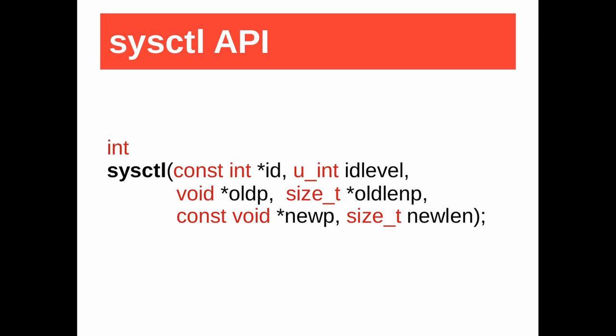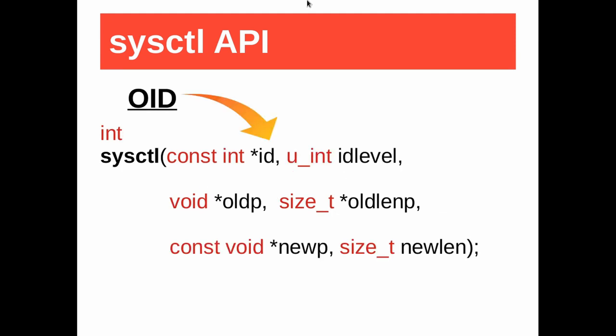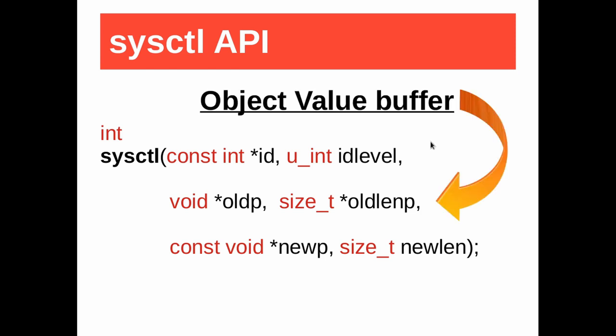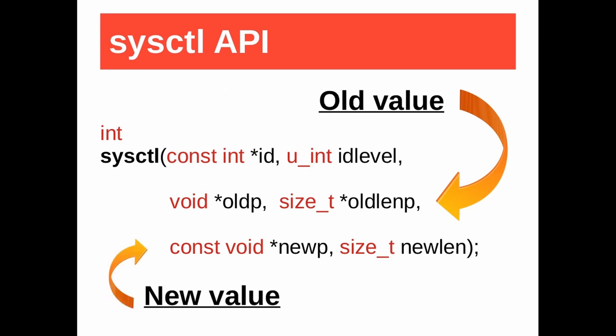sysctl is fully documented in the third section of the manual. The first and second arguments represent the OID — they are an int array and an unsigned int. An OID is a series of integers and we need a variable to know its levels. The level should be between 1 and the CTL_MAXNAME constant, currently set to 24. sysctl fills the old buffer with the value of the object. If it is null, only its size will be set. If new_p is not null, it will be the new value of the object.